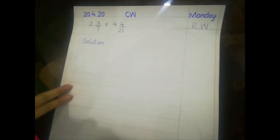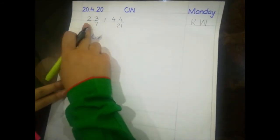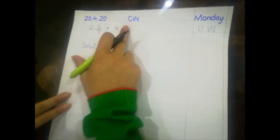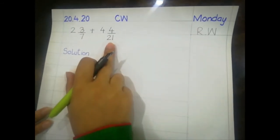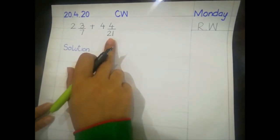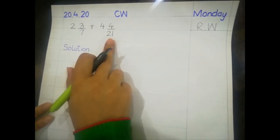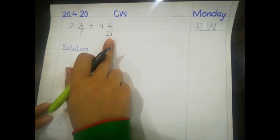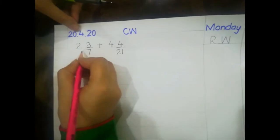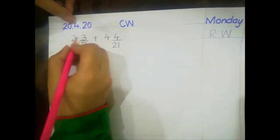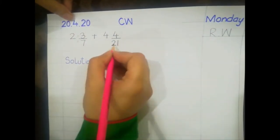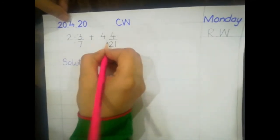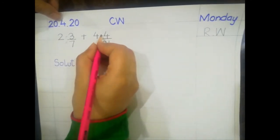Now we move to the next question: the addition of mixed numbers — 2 whole 3 by 7 plus 4 whole 4 by 21. Whenever we add mixed numbers, first we change the mixed numbers into improper fractions. To do this, multiply the denominator by the whole number and then add the result to the numerator.